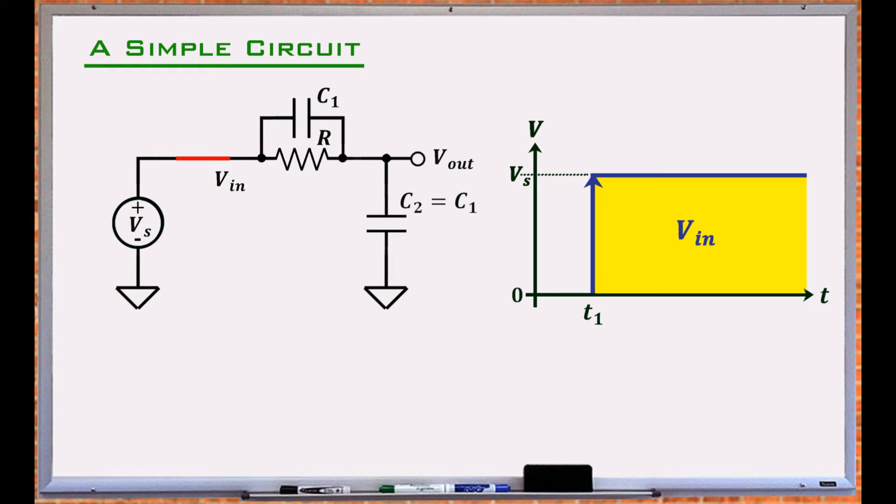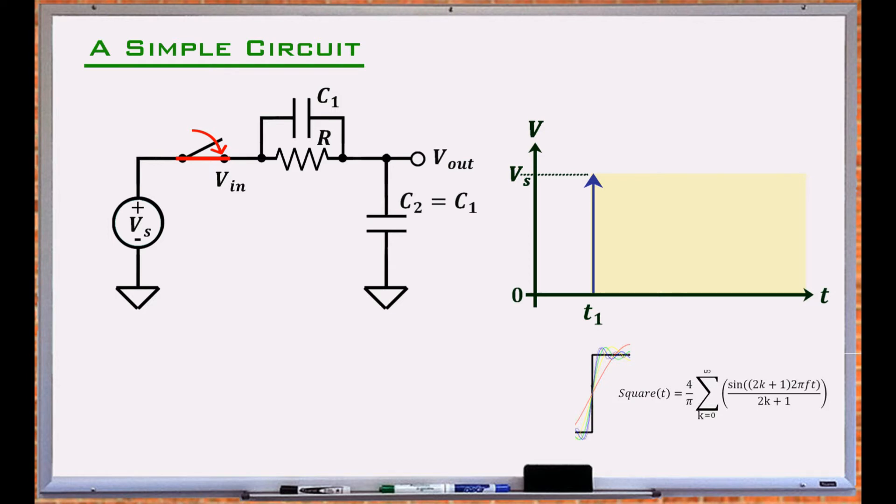Under ideal conditions, Vin rises in an infinitesimally small amount of time. This transition generates infinite number of frequency components. The impedance of the capacitors, regardless of their values, approach zero as the applied frequency increases.